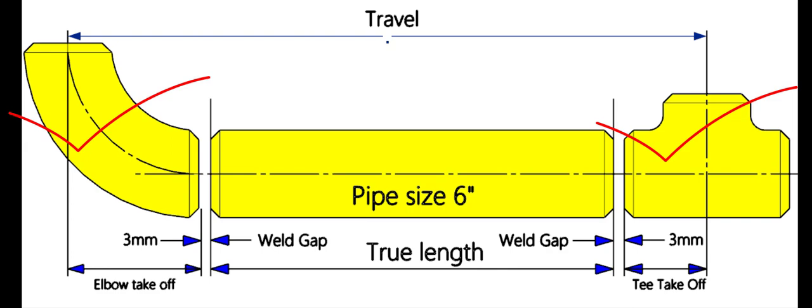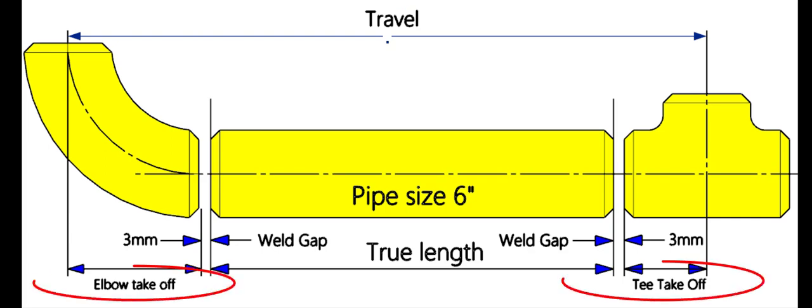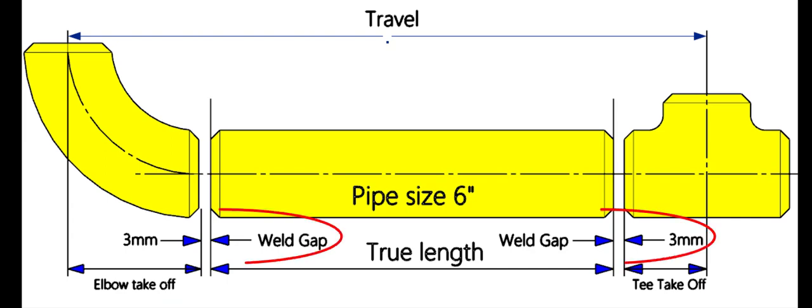To calculate the true length of the pipe, we need to know three things: the travel length, the takeoff length of the fittings, and the weld gap or the joint root gap.